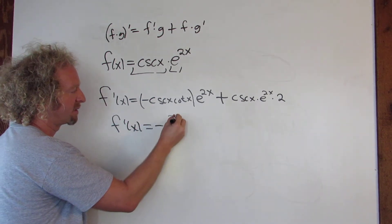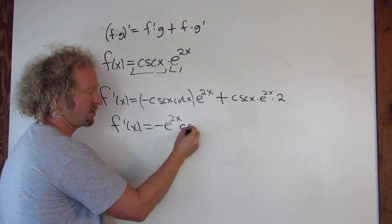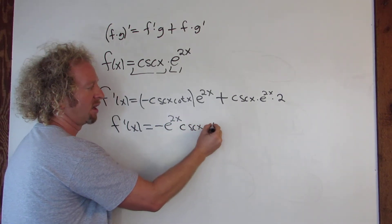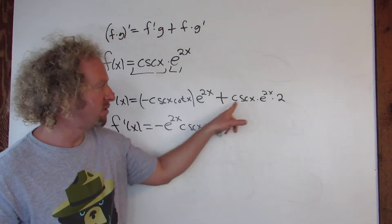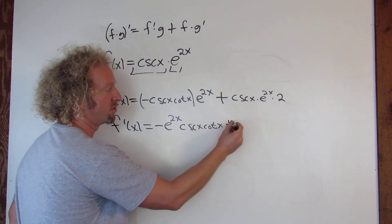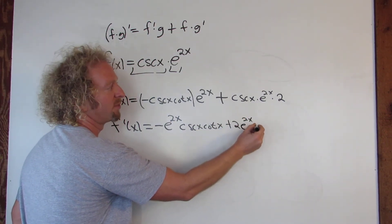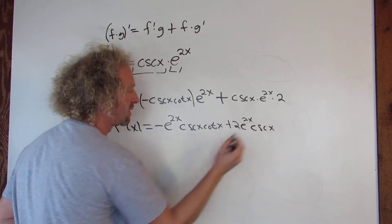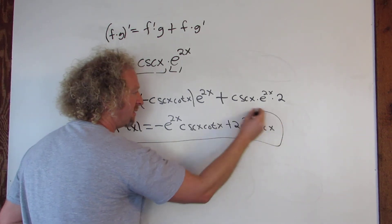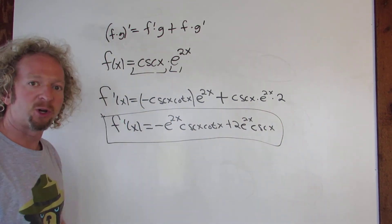And then cosecant x, cotangent x. And then maybe put the 2e in the front again over here. So plus 2e to the 2x, cosecant x. And that is the final answer. I hope that made sense.